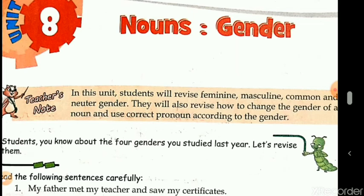For neuter gender, we always use the pronoun 'it'. For masculine, we use 'he', 'his', 'him'. For feminine, we use 'she', 'her'. So there are four types of gender: masculine gender, feminine gender, common gender and neuter gender.